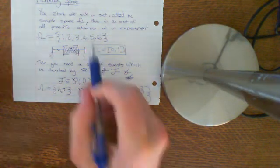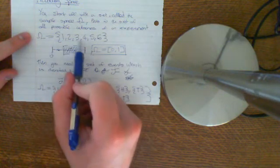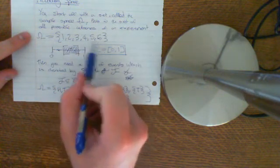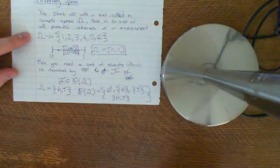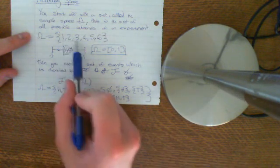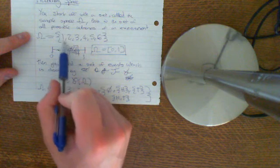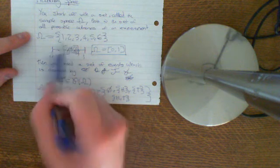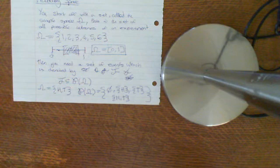In the finite case, because there are only finitely many things, all the singleton sets would be in your events, since you can ascribe a probability to them. And because of that, you could have any of these subsets as events — for example, the event of getting a one or a two is a subset, and we can ascribe a probability to that, namely one third.